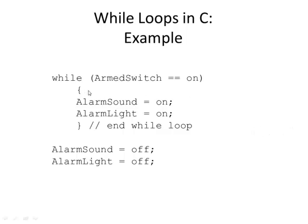As long as the condition is true, it does the loop statements. If we reach this line in the program and the armed switch is already off, we would never even go into the loop — it would just skip over, and it would turn off the sound and the light, which are probably already off to begin with.